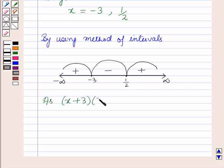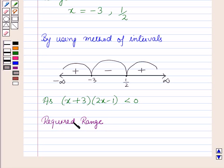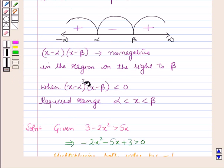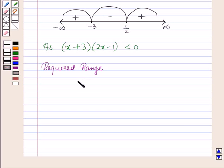Since (x plus 3)(2x minus 1) is less than 0, the required range, according to the formula given in the key idea — if (x minus alpha)(x minus beta) is less than 0 then the range is alpha less than x less than beta — the required range will be minus 3 less than x less than 1/2. This is the solution of the given question, and that's all for this session. Hope you all have enjoyed the session.